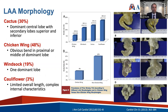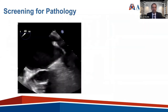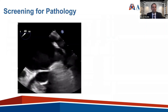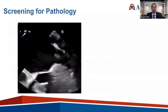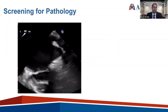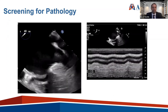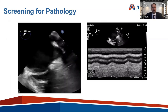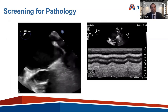Speaking of thromboembolism, the next step in approaching left atrial appendage occlusion is to screen for pathology. Here's an example of a reverberation artifact — a mirror image artifact. As an early attending, I would drop an M-mode through it and see that it follows the atrial ridge perfectly, making it unlikely to be thrombus.